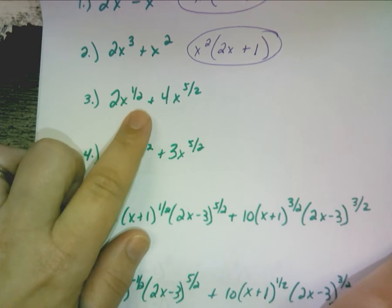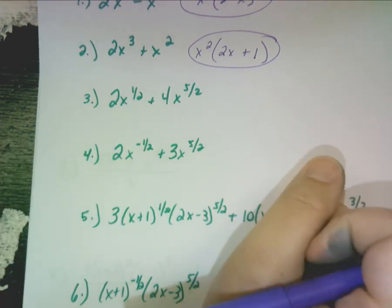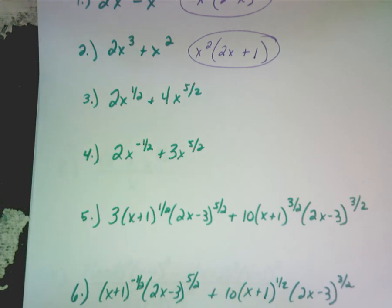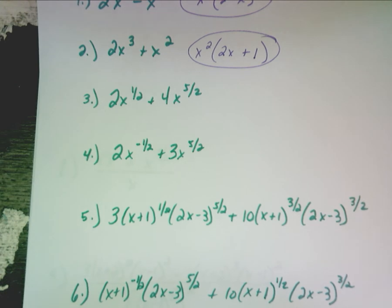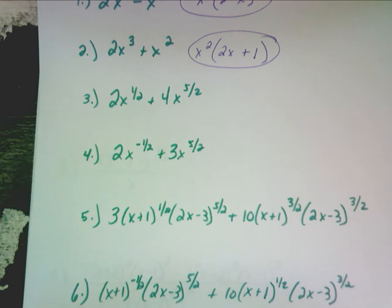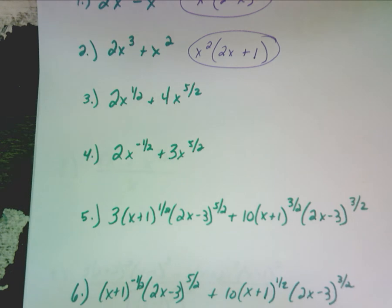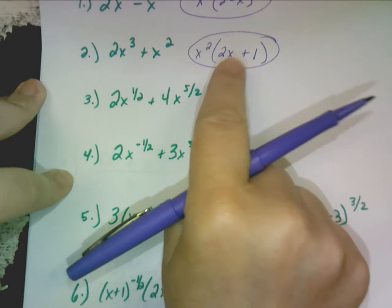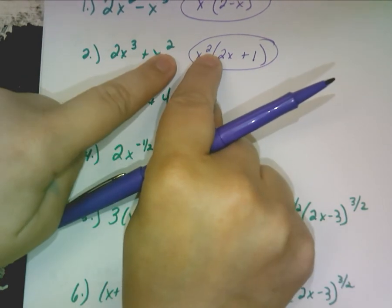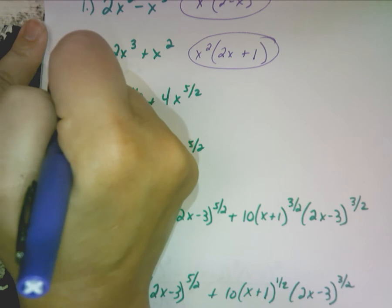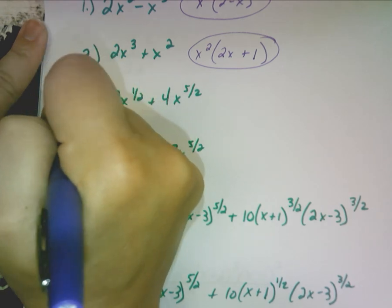What about 2x to the one half plus 4x to the five halves? What should I factor out here? Take out x to the one half. Yes. Why x to the one half and not x to the five halves? It's because of big-small — one half is smaller. Didn't you factor out the lowest here? You always want to factor out the lowest exponent.